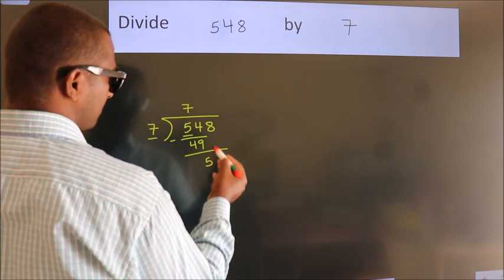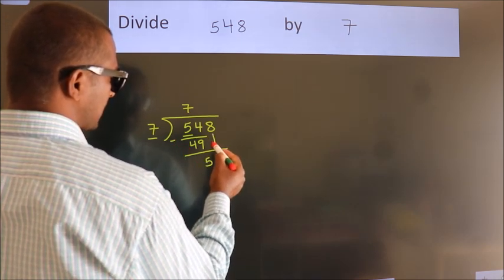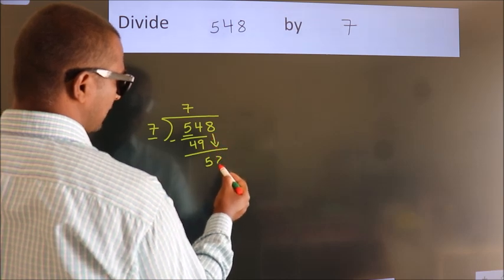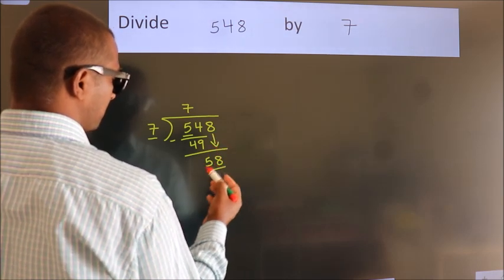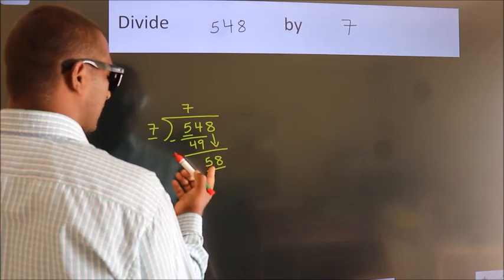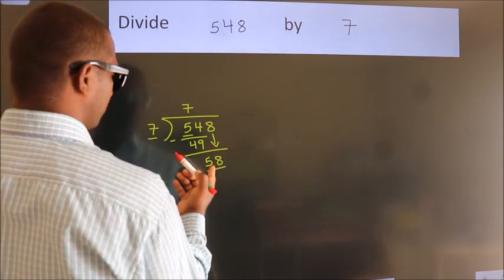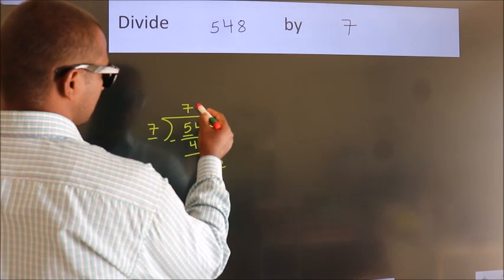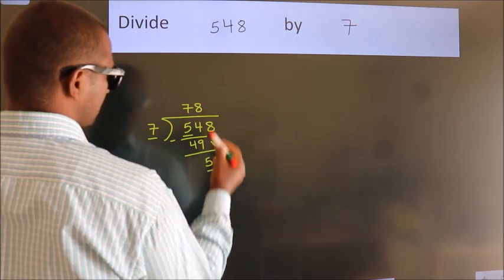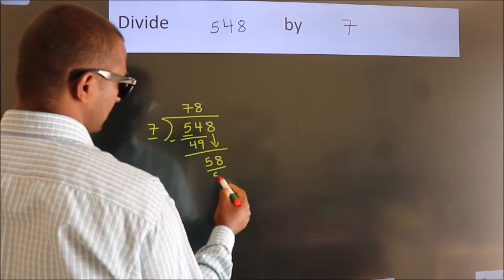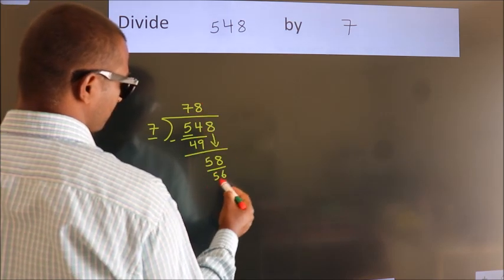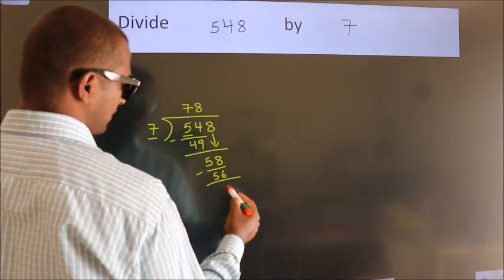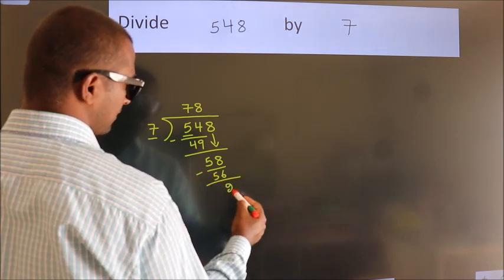After this, bring down the beside number. So 8 comes down, giving us 58. A number close to 58 in the 7 times table is 7×8=56. Now we subtract, and we get 2.